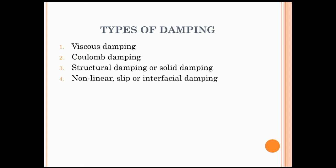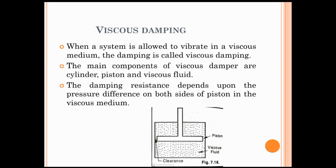The four types are: viscous damping, coulomb damping, structural damping or solid damping, and nonlinear slip or interfacial damping. Viscous damping — when a system is allowed to vibrate in a viscous medium, the damping is called viscous damping. The main components of a viscous damper are cylinder, piston, and viscous fluid.